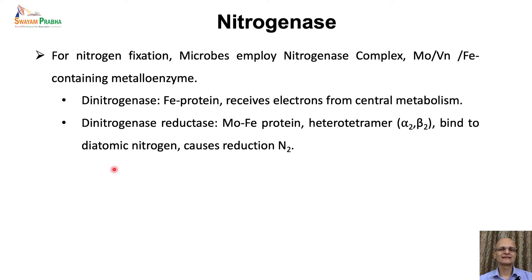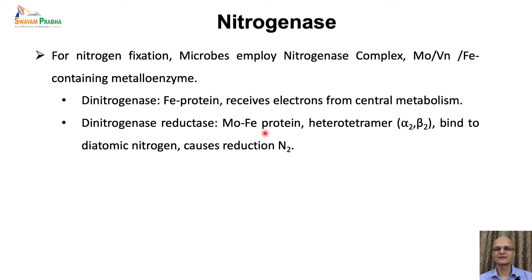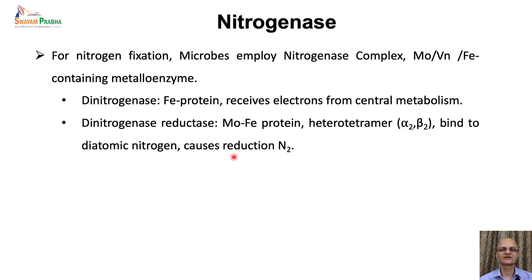The nitrogenase complex is a special enzyme with two major components: dinitrogenase reductase and dinitrogenase. Dinitrogenase reductase is an iron-containing protein that receives electrons from central metabolism. The second component is a molybdenum-iron-containing heterotetramer — that is, an alpha-2-beta-2 type of oligomerization, with two units of alpha and two units of beta. It binds to diatomic nitrogen and causes reduction of the triple bond in dinitrogen.